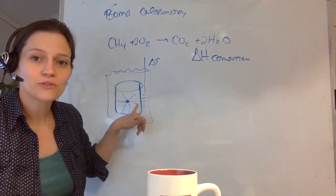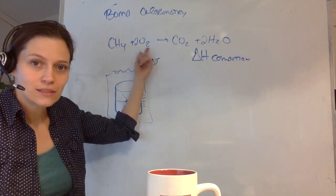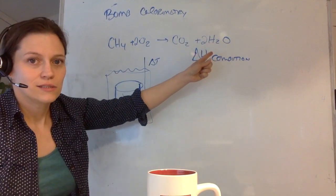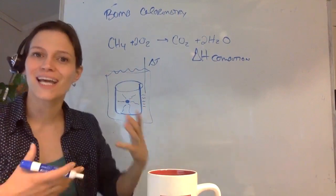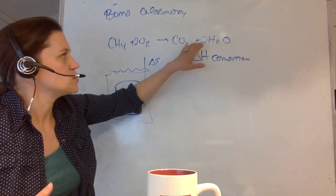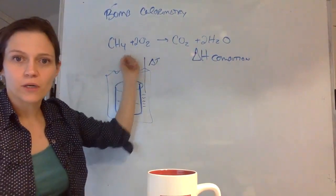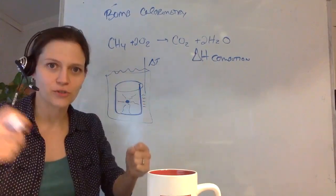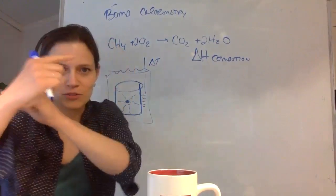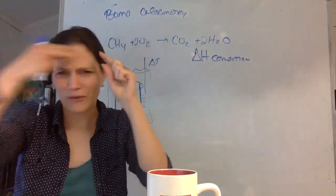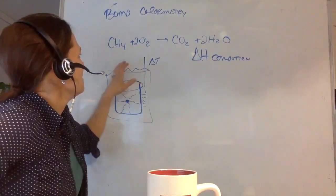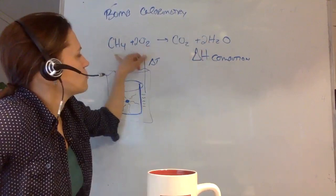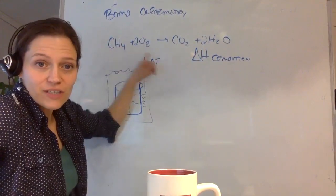This heat energy comes from what — the breaking of the bonds or the forming of the bonds? Your answer should be both, because what you're doing is you're looking at Hess's law, and Hess's law looks at the difference between the forming of the bonds — giving off energy — and the breaking of the bonds, which takes energy. It takes energy to break a bond. So when you break the bonds here it takes energy; when they form here, CO₂ and H₂O are much more stable than the combination of these two, so heat energy is given off.